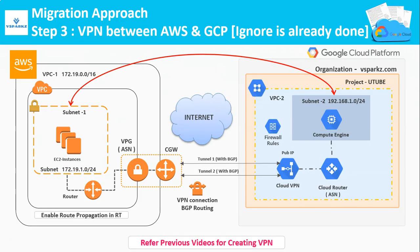Step 3: You need to create a VPN between AWS and GCP. You can ignore this step if you would have done this before in steps 1 and 2. This is the architecture diagram for VPN, and if you don't know how to create a VPN between these two clouds, please refer to the channel's previous videos.